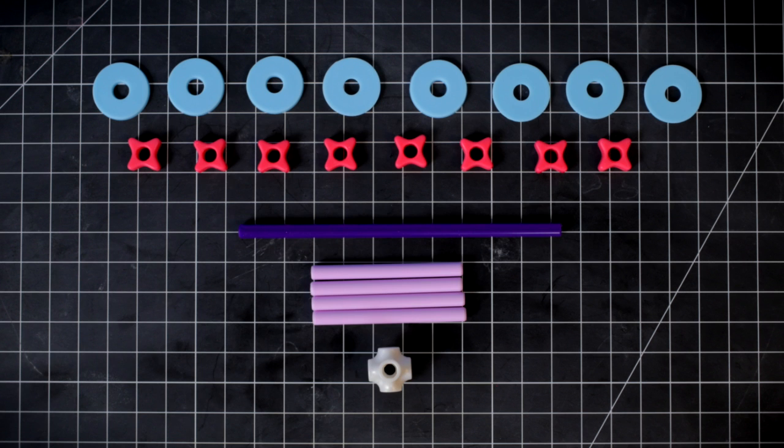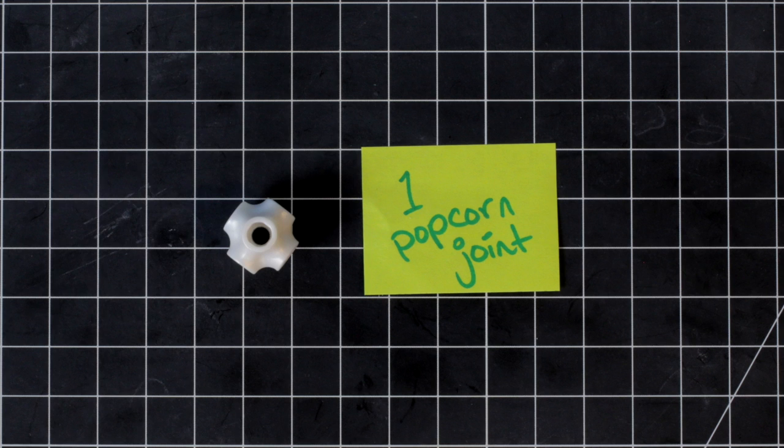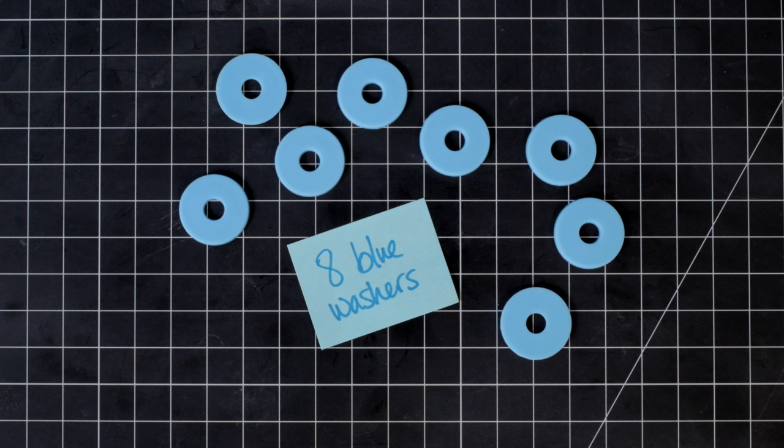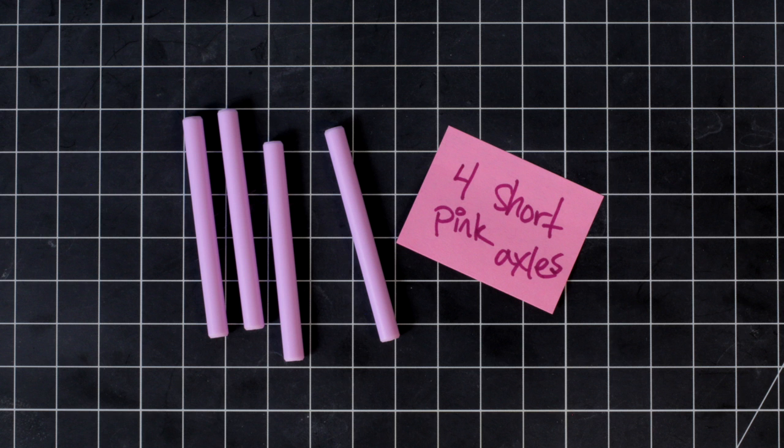Make sure you have everything. One long purple axle, one popcorn joint, eight blue washers, eight pink spacers, and four short pink axles.